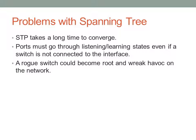A rogue switch could possibly become root on the network. For example, a malicious attacker could set a very low priority value on a switch and connect it to your existing SpanningTree topology. Assuming you don't have any protection, that switch will become the root — the center of your switching universe — and all traffic between switches will be forwarded through it. You don't want people messing with your SpanningTree topology; it can cause all sorts of performance and security issues.